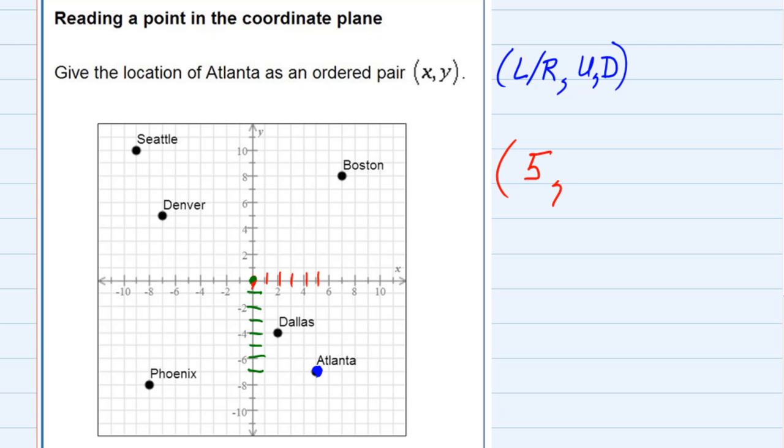Since it's down, you can see here on the scale that those are negatives. We want to go down 7, so the coordinates for Atlanta are 5, negative 7. 5 to the right from the origin and then 7 down from the origin puts us on that point.